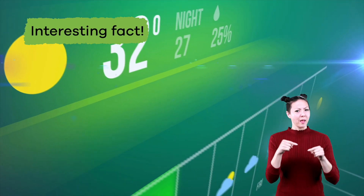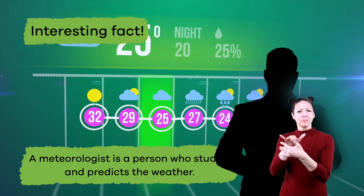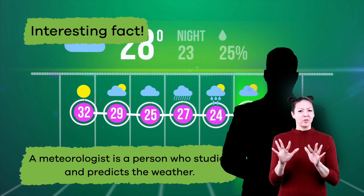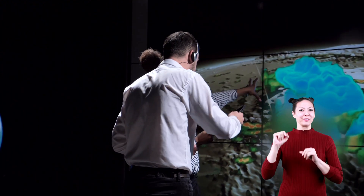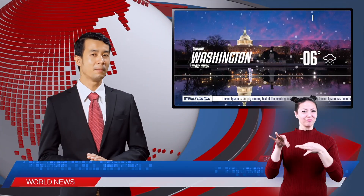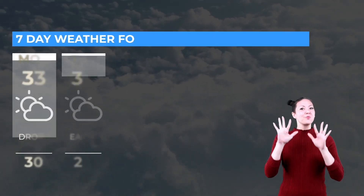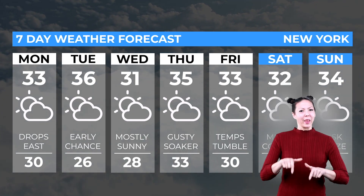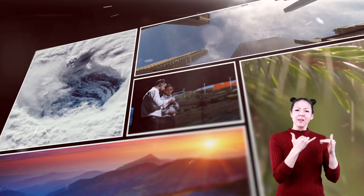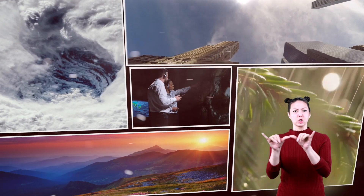Here is an interesting fact. A meteorologist is a person who studies and predicts the weather. You might have even seen a meteorologist on the news. They are the people who stand in front of a weather map and give forecasts, or educated predictions, of what the weather will be like during the week in the area where you live. Now that we have talked about what weather is, let's talk about the different types of weather and how each are measured.